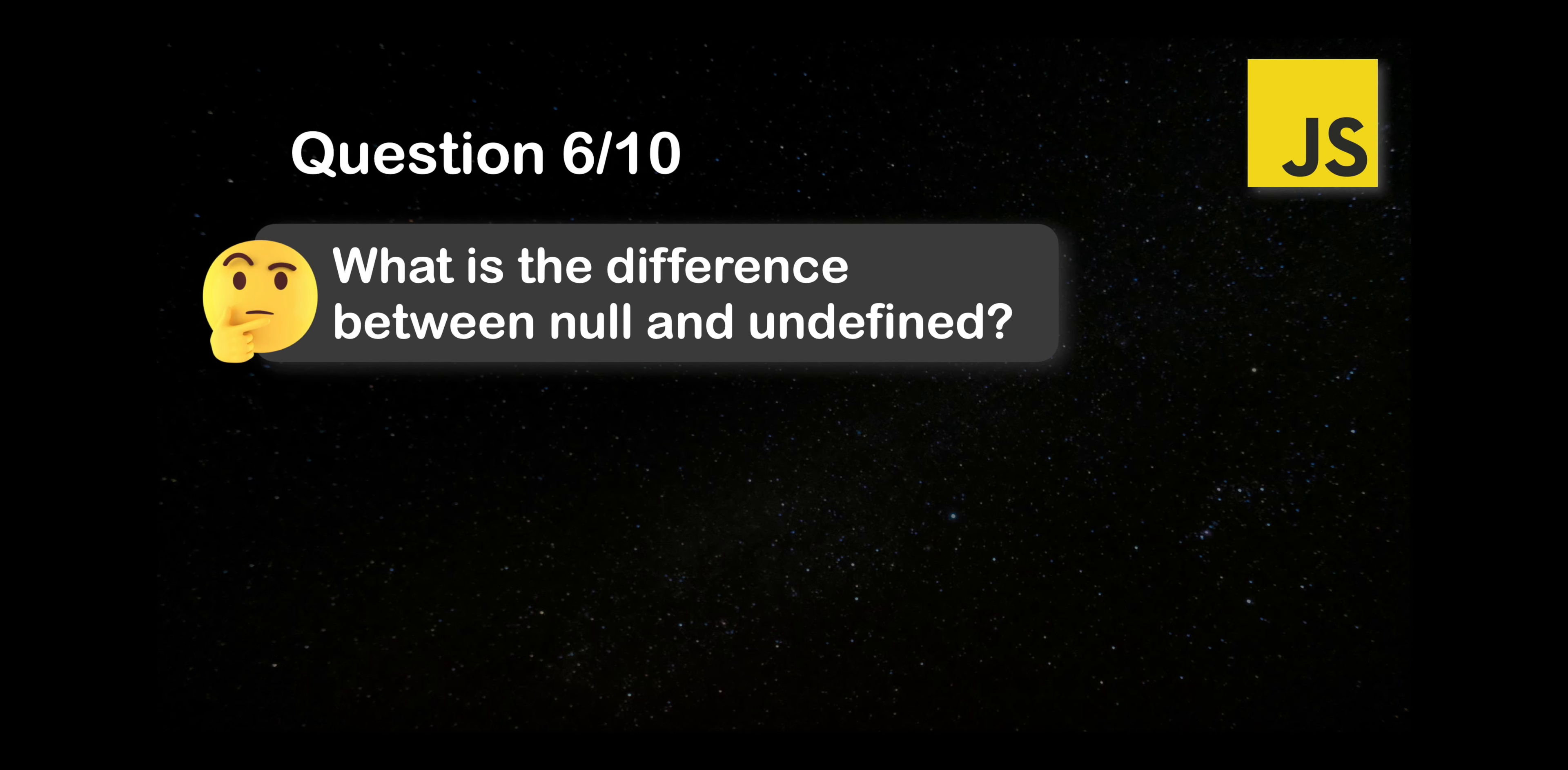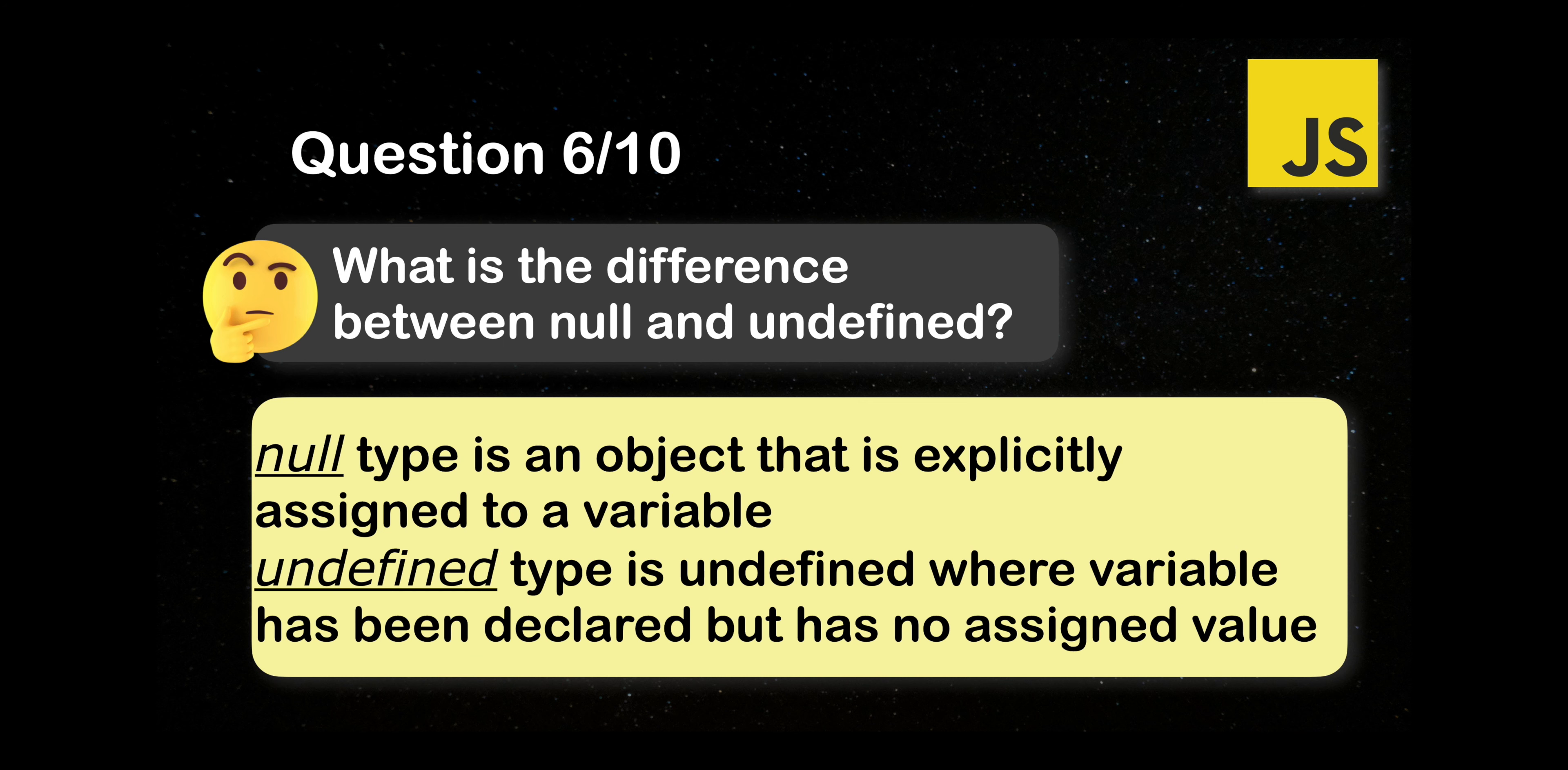Next question. What is the difference between null and undefined? Null's type is an object that is explicitly assigned to a variable. Undefined type is undefined where a variable has been declared but has no assigned value.